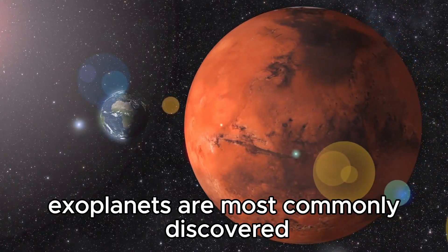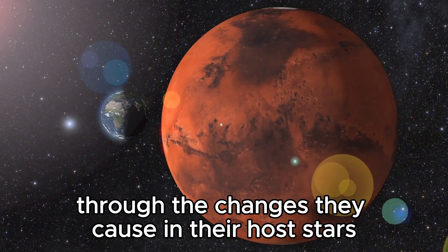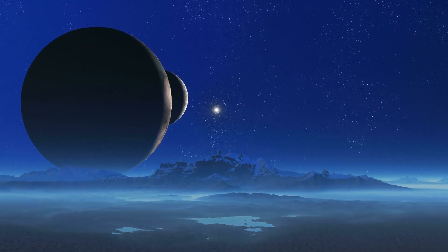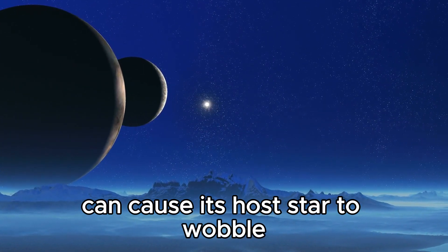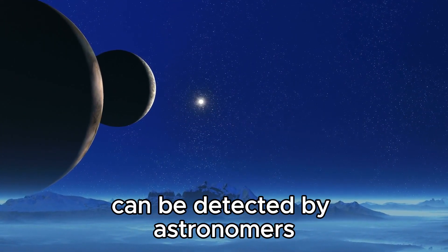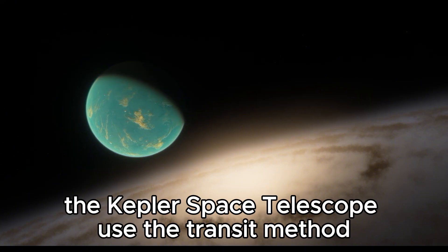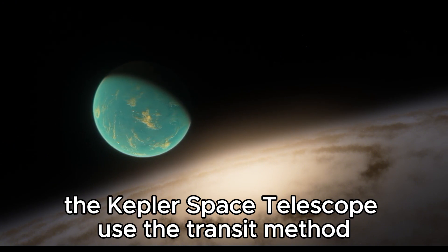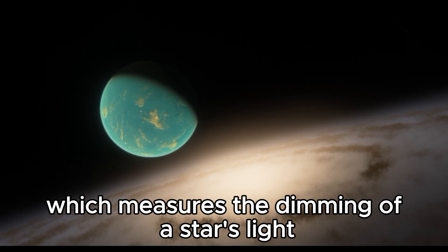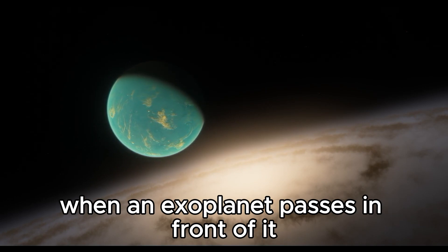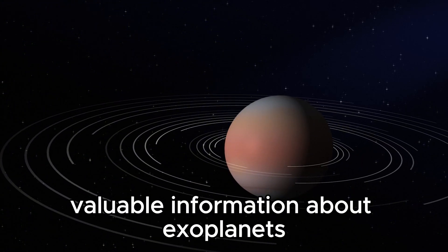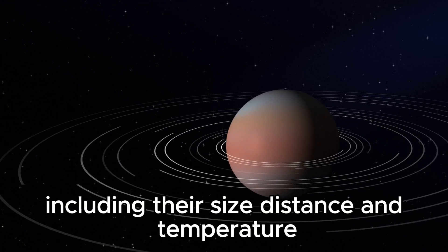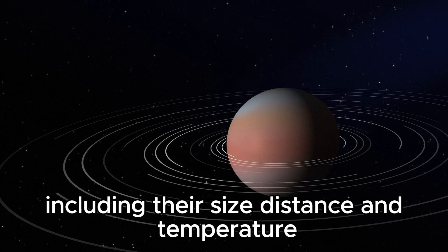Exoplanets are most commonly discovered through the changes they cause in their host stars. The gravitational influence of an exoplanet can cause its host star to wobble, and this radial velocity can be detected by astronomers. The Kepler Space Telescope used the transit method, which measures the dimming of a star's light when an exoplanet passes in front of it. This method has provided valuable information about exoplanets, including their size, distance, and temperature.